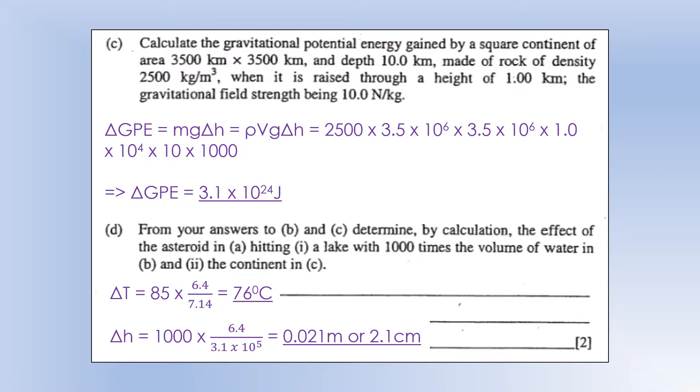From your answers to B and C, determined by calculation, the effect of an asteroid hitting a lake with a thousand times the volume of water and striking a continent. If we look at the amount of energy the asteroid has, it's considerably, well, a little bit less than the energy that we supplied in the question. So, I'm going to do the ratio of those two times by the temperature change we got with the 7.14, and that would give us a temperature change of 76 degrees Celsius. So, we'd still get quite a big temperature change from all of the energy of the asteroid, even though we have a thousand times more water.